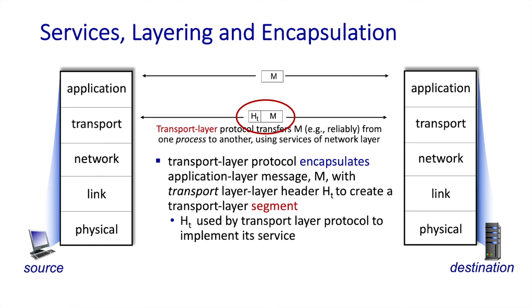What information is included in a segment along with the application layer message? Some information is needed to identify the process to which the message will be delivered at the destination, since many processes may be running there. In the case of TCP, which implements reliable data transfer, a lot of information must be included in the segment to implement that service. The process of taking a data unit from a higher layer and adding information to create a new protocol data unit at another layer is called encapsulation — a really important concept.